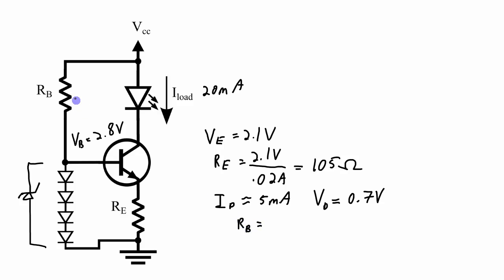So RB is going to be, well, we want about 5 milliamps through RB and we are going to have 5 minus 2.8 volts across it. So if we go voltage over the current that we want, that gives me 440 ohms for RB.